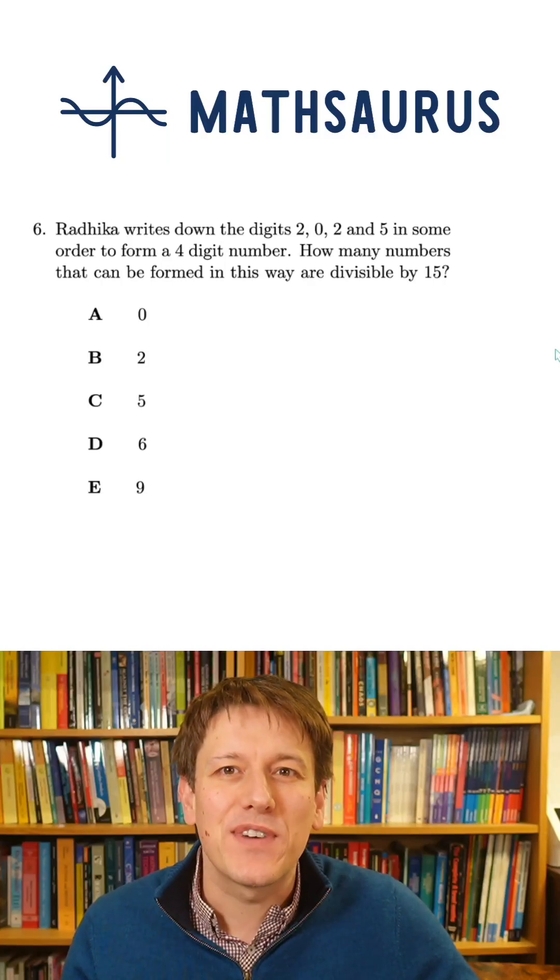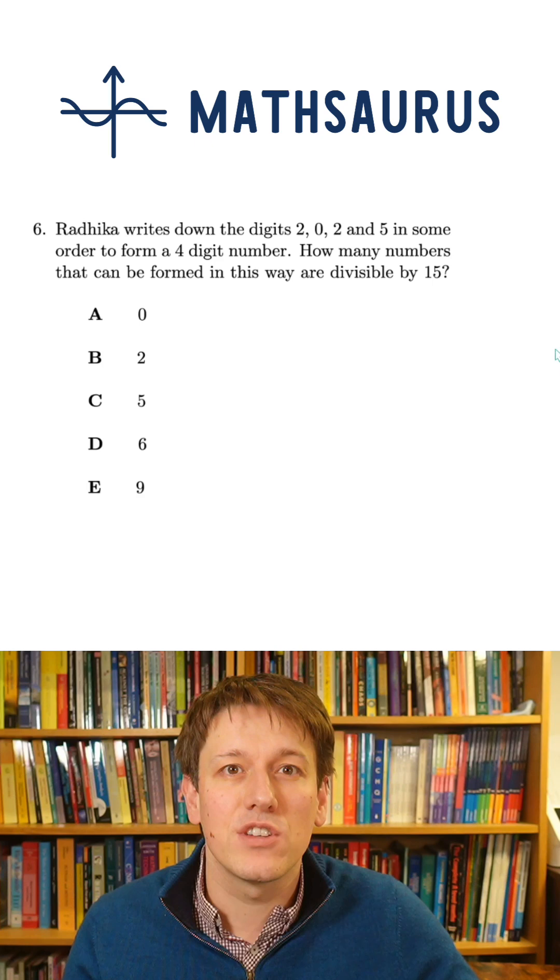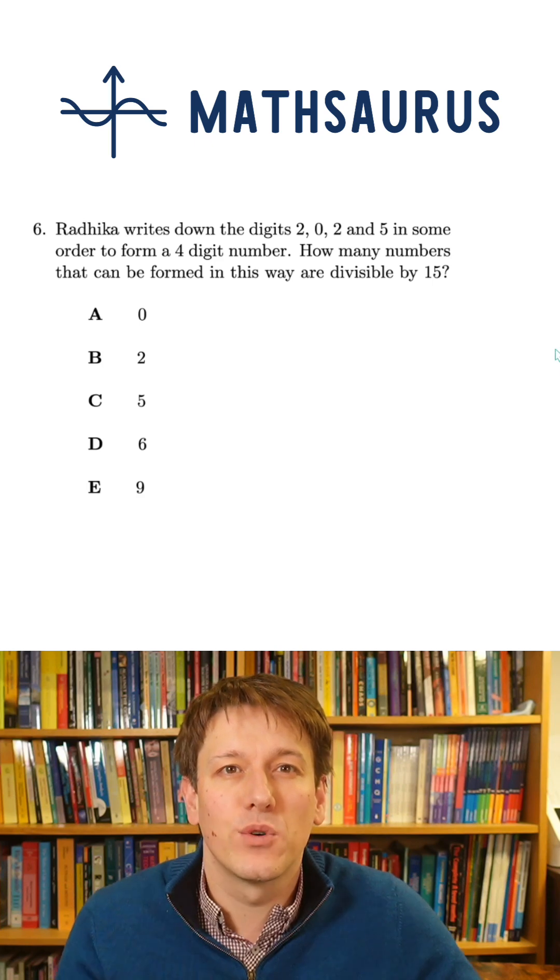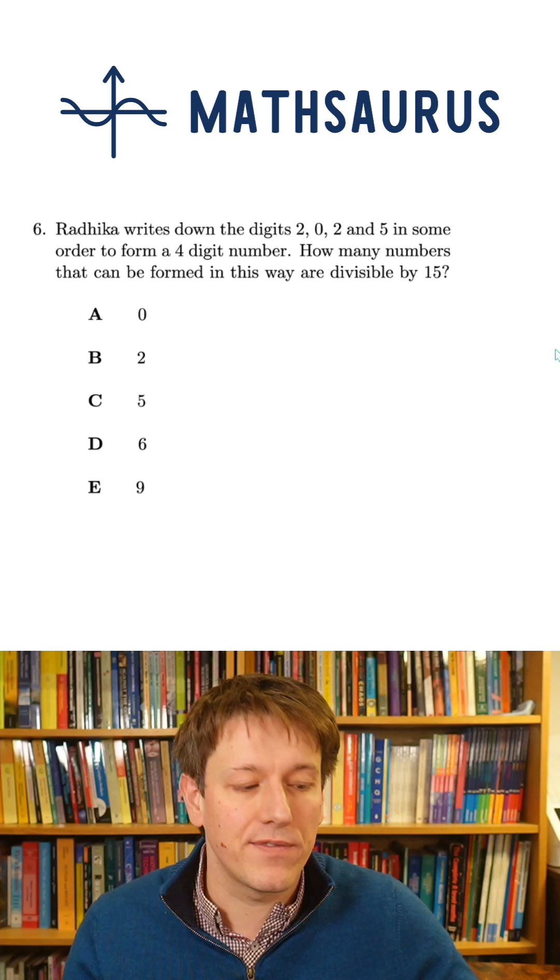Here's another question that could easily be a 2025 math challenge question. Radhika writes down the digits 2, 0, 2, and 5 in some order to form a four-digit number. How many numbers that can be formed in this way are divisible by 15?